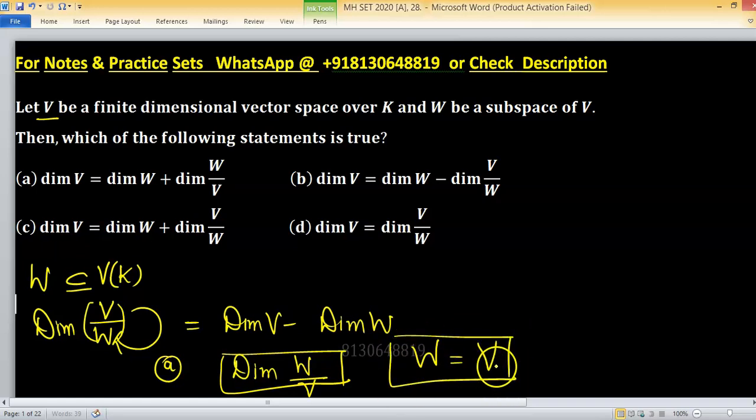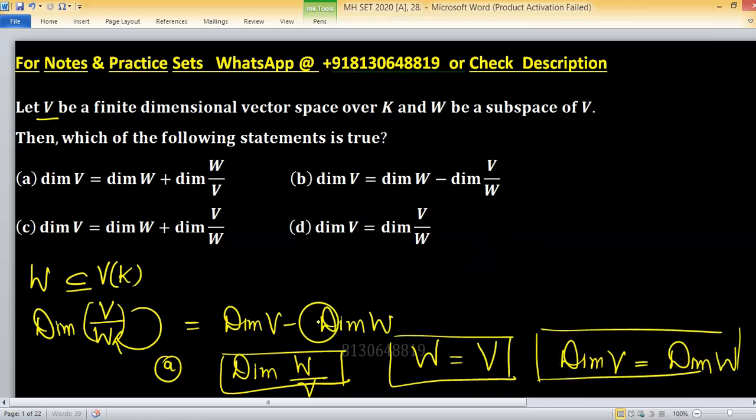The dimension of V in the quotient space formulation makes no sense this way. When dimension of V equals dimension of W, this property will hold in finite dimensional vector spaces. The correct formula tells us dimension of V equals dimension of W plus dimension of V over W.